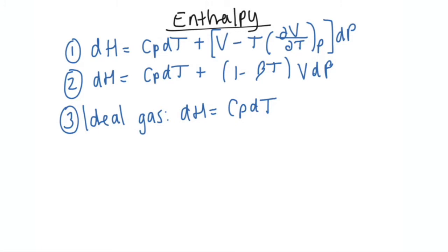Next is enthalpy — same idea, just a few fewer equations. Equation one: if I want the change in enthalpy, I integrate CP DT. You could get a correlation from your tables and integrate with respect to temperature. Here we also have molar volume and a partial derivative. When you see partials, you need a correlation given to you so you can manipulate molar volume and do a derivative with respect to temperature. If you don't have that, scratch equation one — you can't use it.